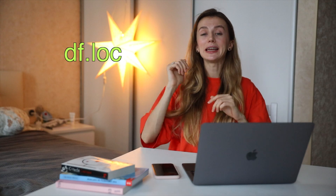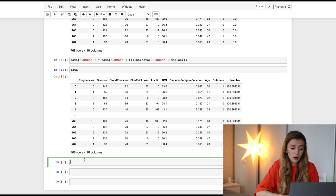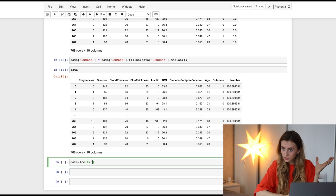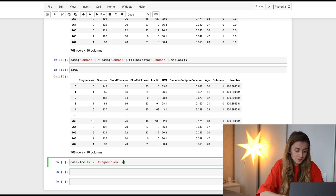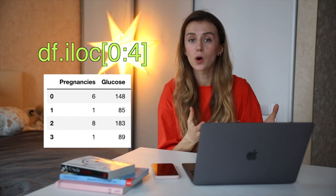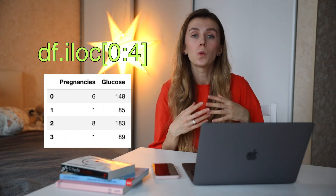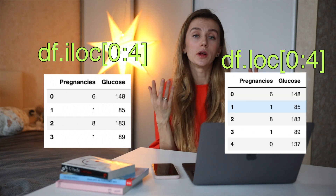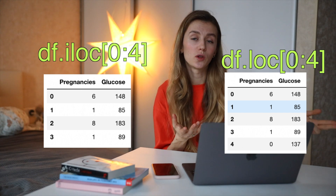Next, let's talk about loc. It helps us access a group of rows and columns in a dataset — essentially slicing a dataset per our requirements. For instance, if you want to access the first two rows and three columns, we can do that with loc. There is also iloc, which works in a similar manner but is not inclusive on the end value. So iloc from 0 to 4 returns rows with index 0, 1, 2, 3, while loc from 0 to 4 returns rows with index 0, 1, 2, 3, and 4.